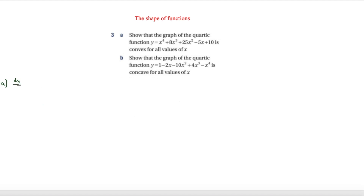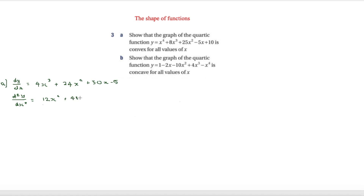Starting with dy/dx, that is equal to 4x³ + 24x² + 50x − 5. If you don't understand how to do this, watch my video about how to differentiate. Differentiating again gives us d²y/dx², which is equal to 12x² + 48x + 50.